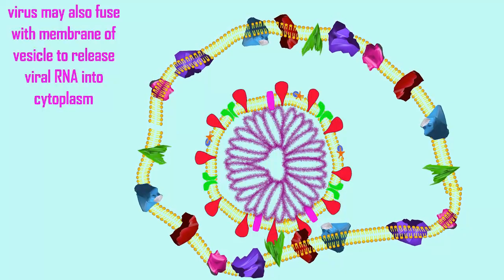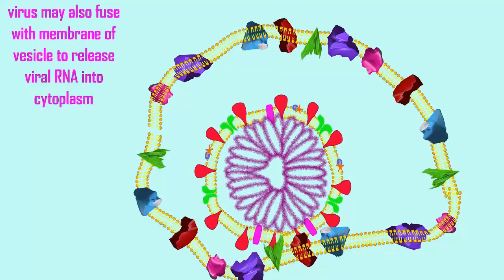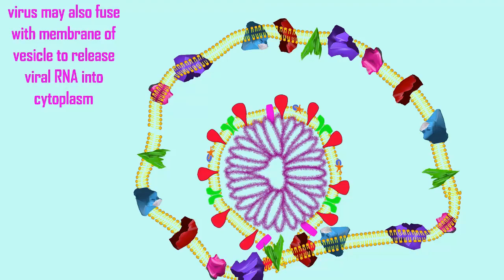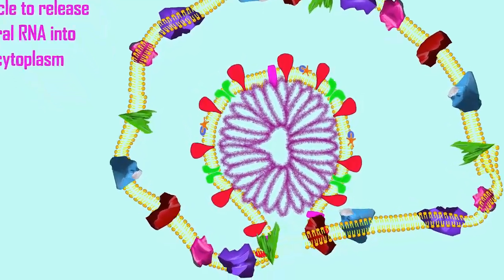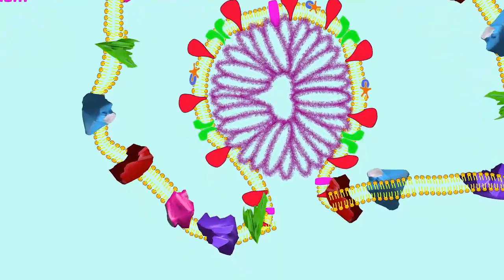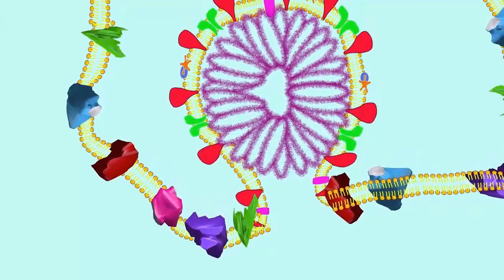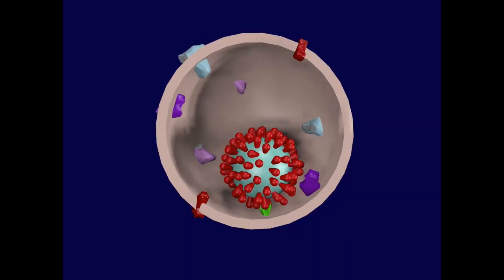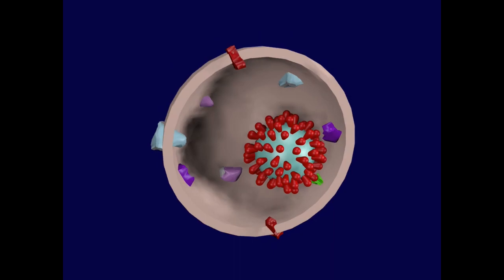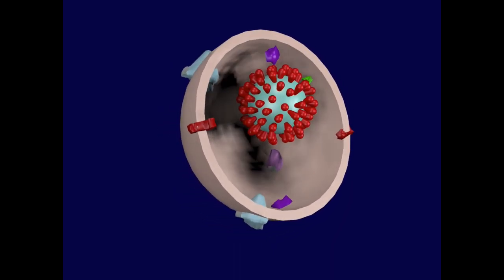but now seems to at least primarily involve endocytosis and the fusion of the viral envelope with the vesicle membrane, because proteins involved in forming endosomes and lowering the pH seem to be important in the infection of coronavirus.